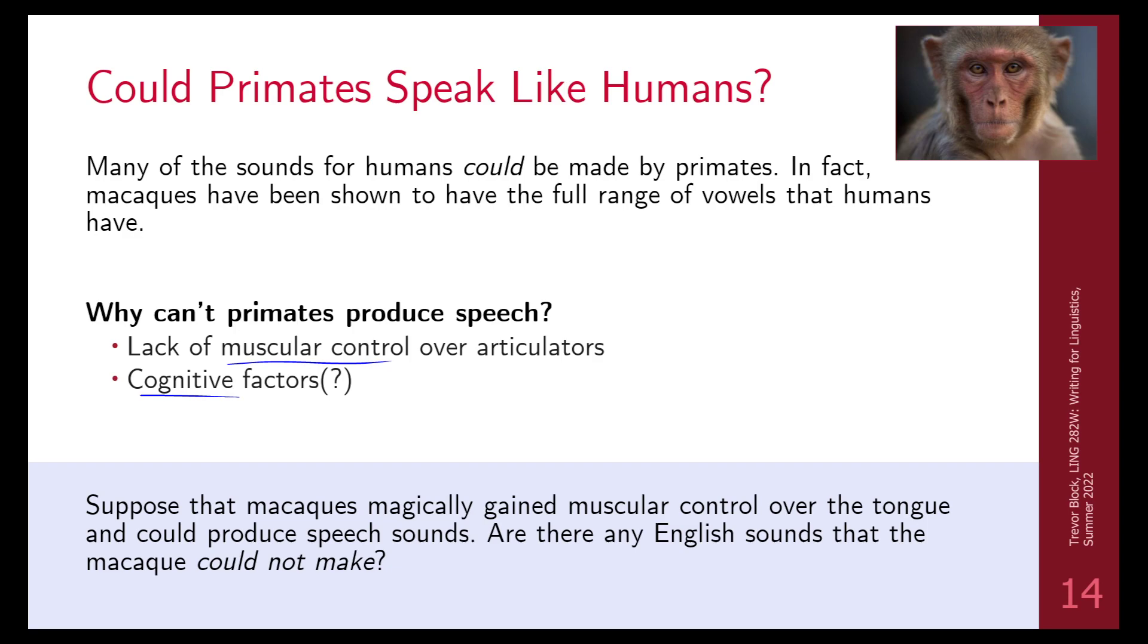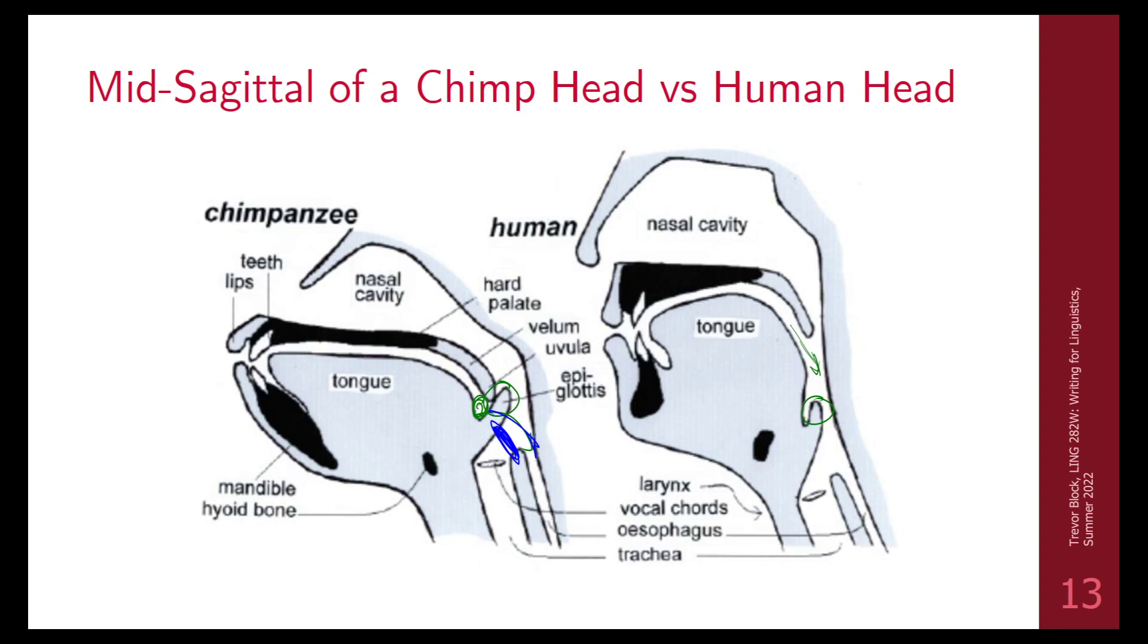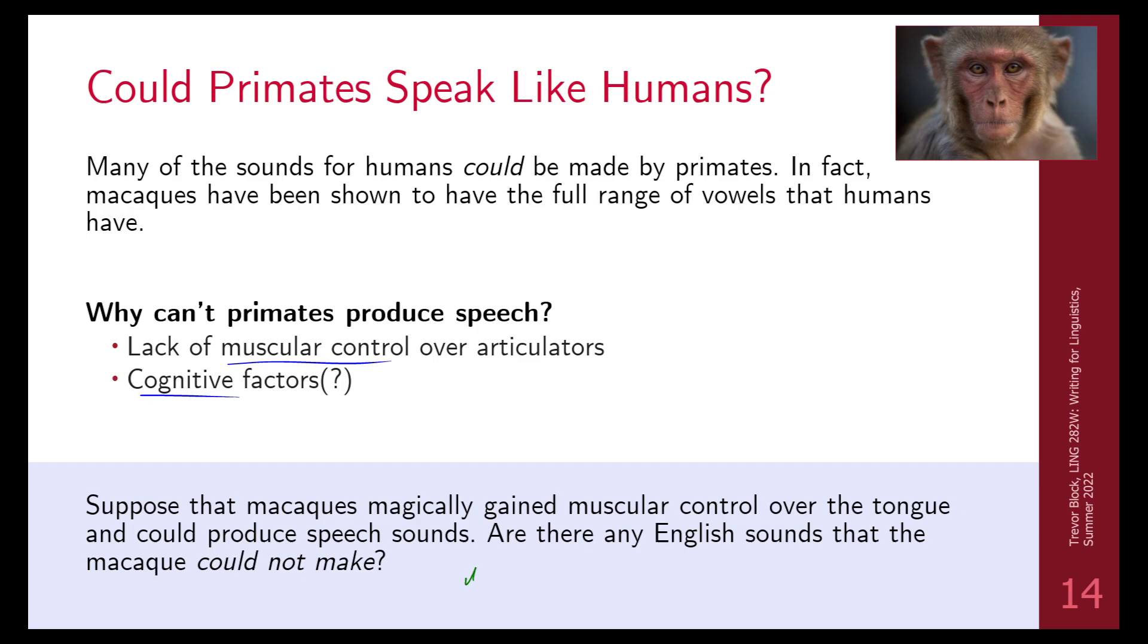If macaques could produce sounds, would there be any sounds in English that they couldn't do? It would be hard to give definite answers to this, but the understanding is that theoretically they could produce any English sound. They have teeth so they can do interdentals. What they might not be able to do is whether they have control over the back of their tongue to bunch it up. So it is possible that these retroflex sounds wouldn't be possible if they don't have control over the back of their tongue. But I can't say that for certain, so theoretically they could produce anything.